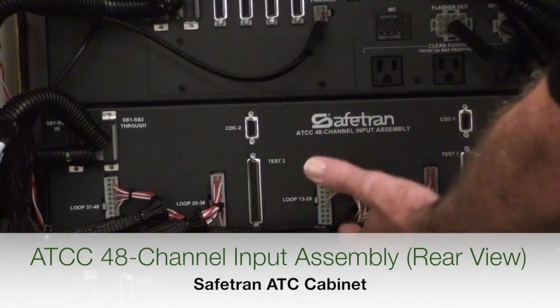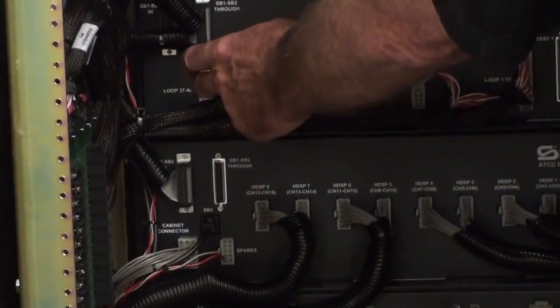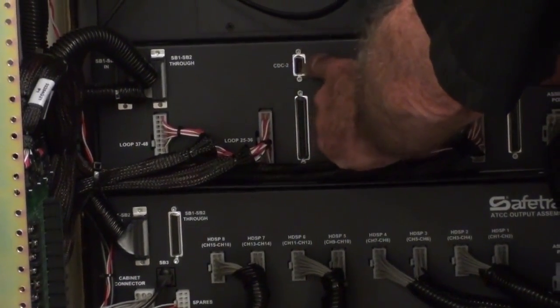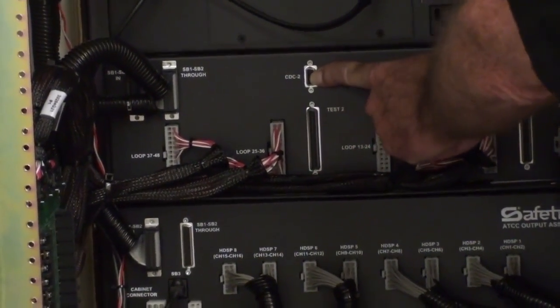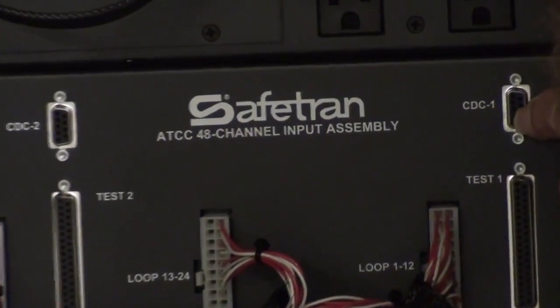Looking at the back panel of the 48-channel input assembly, you can see there are four input connectors that route down to the detector termination panels. These are the CDC connectors that were mentioned earlier that provide the four opto-isolated inputs for connecting the pedestrian inputs.